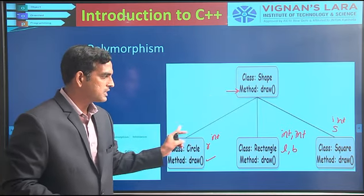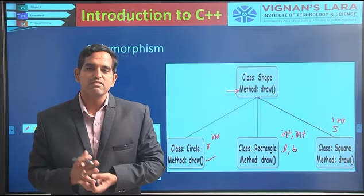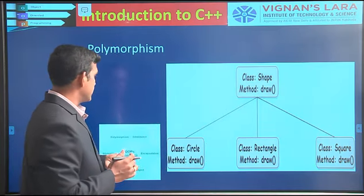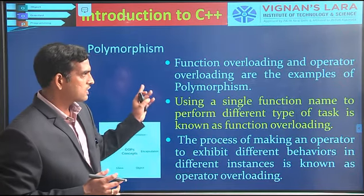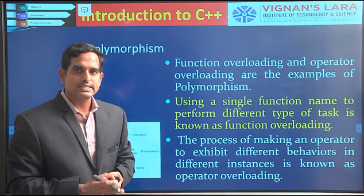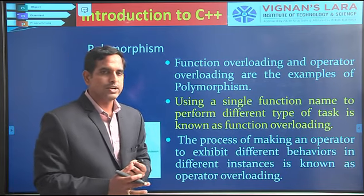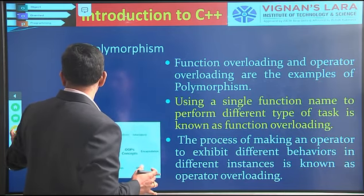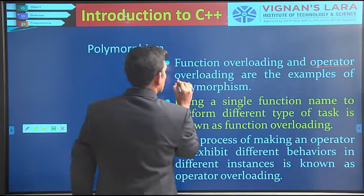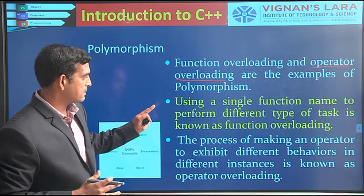A particular thing taking more than one form we call polymorphism. Function overloading and another type — operator overloading — are examples of implementing polymorphism. Apart from function overloading, we can implement polymorphism by using operator overloading.